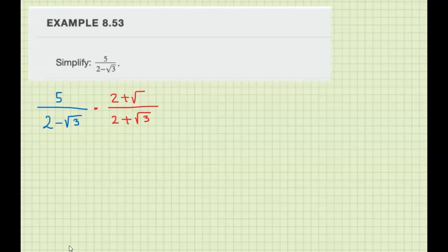So the reason for that is because when you multiply these same numbers but opposite signs, you get difference of squares, which means the radicals will cancel, right?